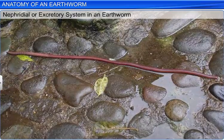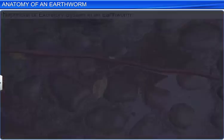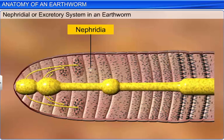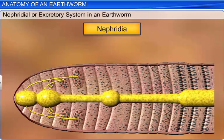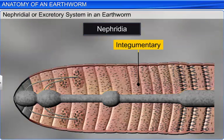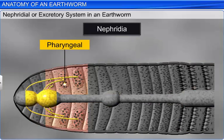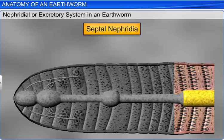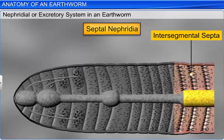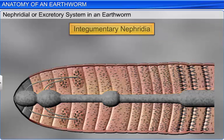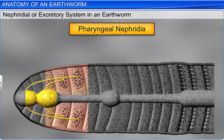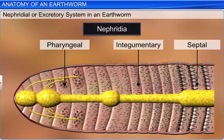The nephridial or excretory system is also part of the anatomy of an earthworm. Earthworms have several nephridia that function as excretory organs. There are three types of nephridia: septal, integumentary, and pharyngeal. The septal nephridia are present on either side of the intersegmental septa between the fifteenth segment and the last segment and open into the intestine. The integumentary nephridia are attached to the lining of the body wall from the third segment to the last segment and open onto the body surface. The pharyngeal nephridia occur as paired tufts on either side of the pharynx and esophagus from the fourth to the sixth segments. All three types regulate the volume and composition of body fluids.